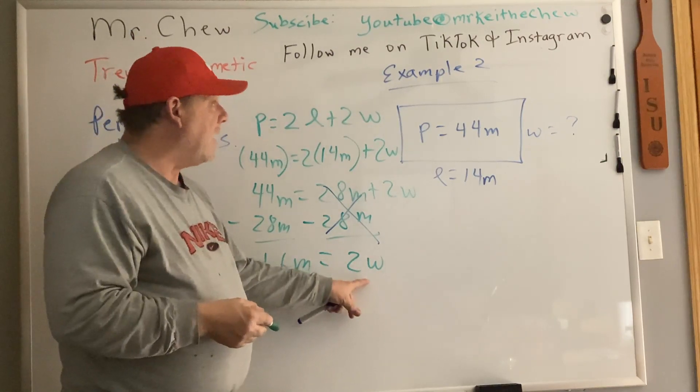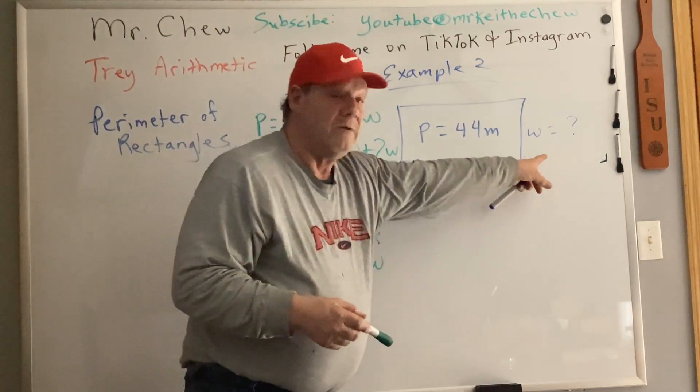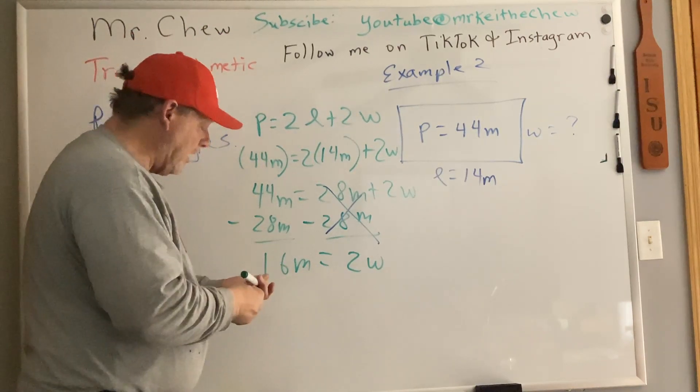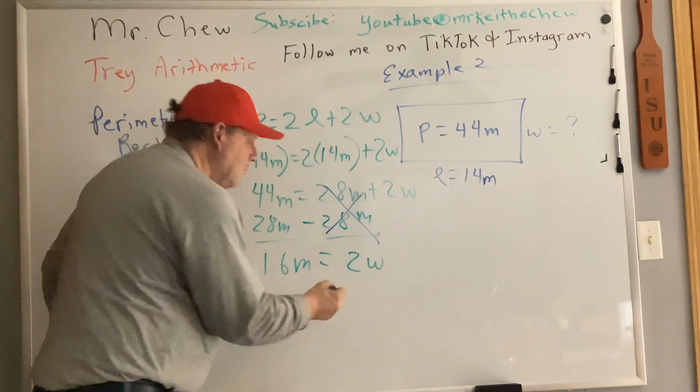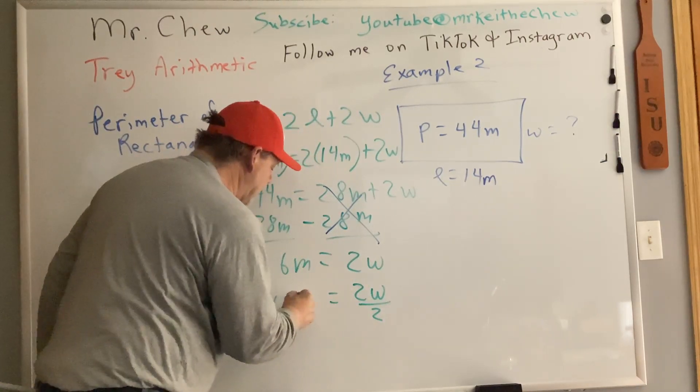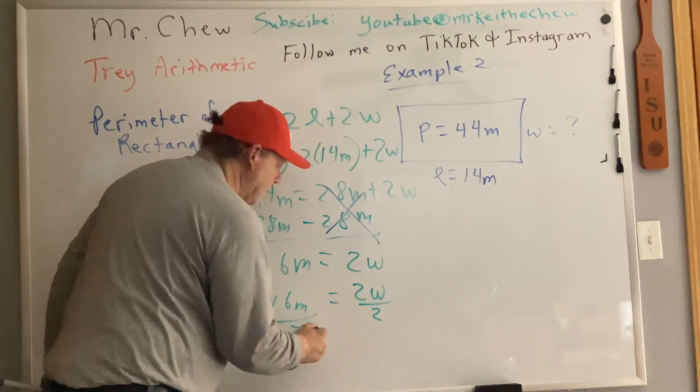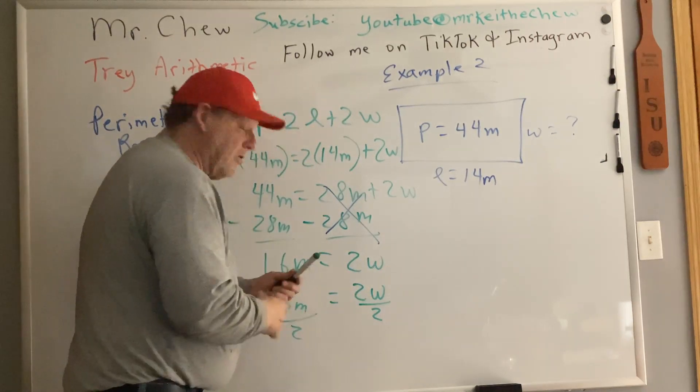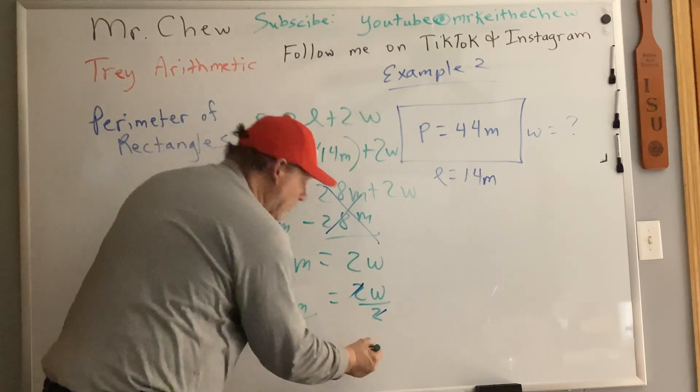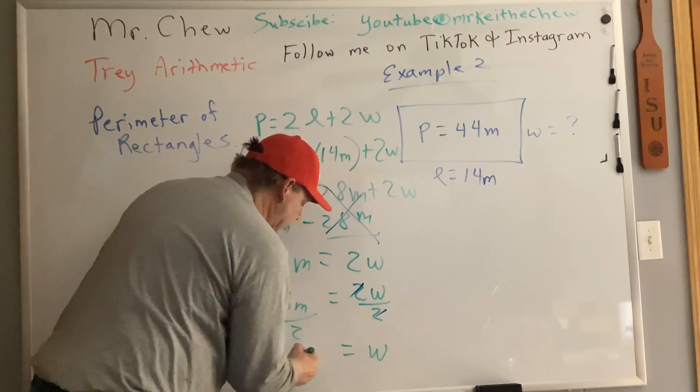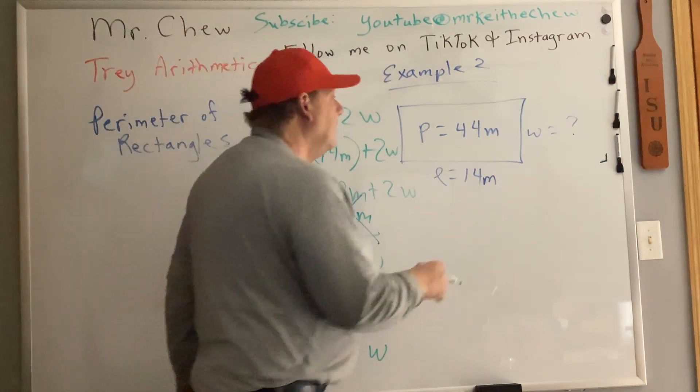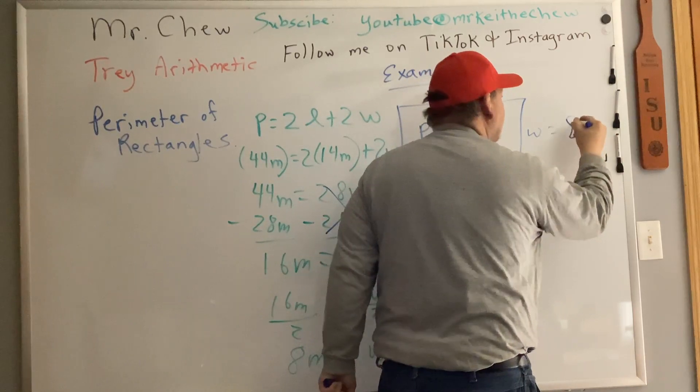My second step is I need to find out what W is. So I do the inverse of 2 times W, which is dividing by 2. And I have to do that to both sides. And this crosses out here when I'm talking about the steps. I'm going to have W equals 8 meters. So I know that this width is 8 meters.